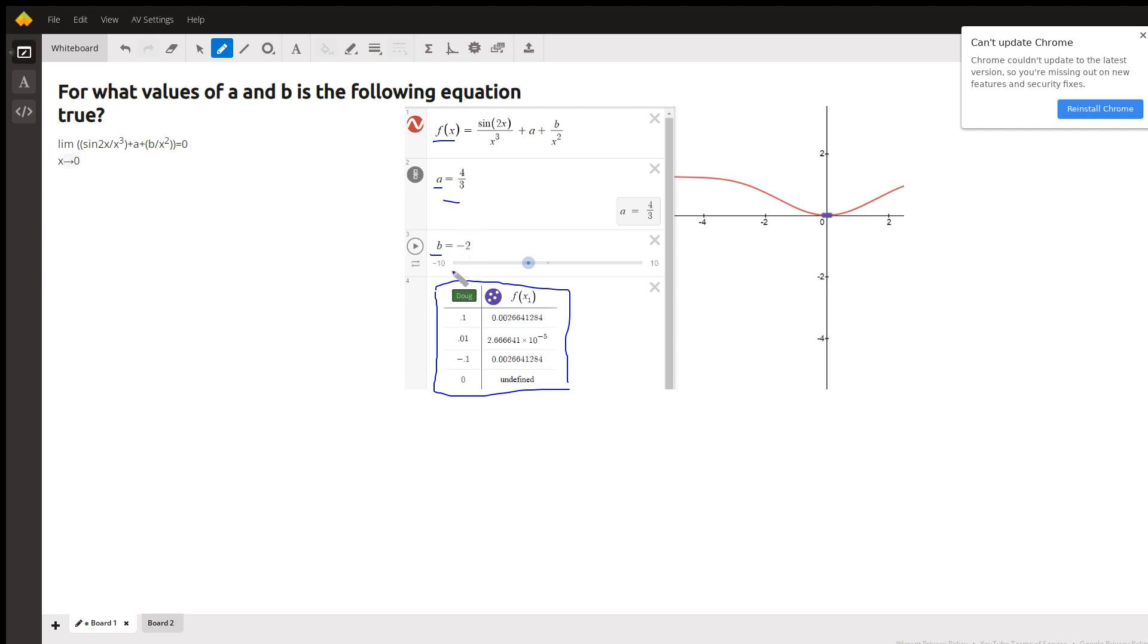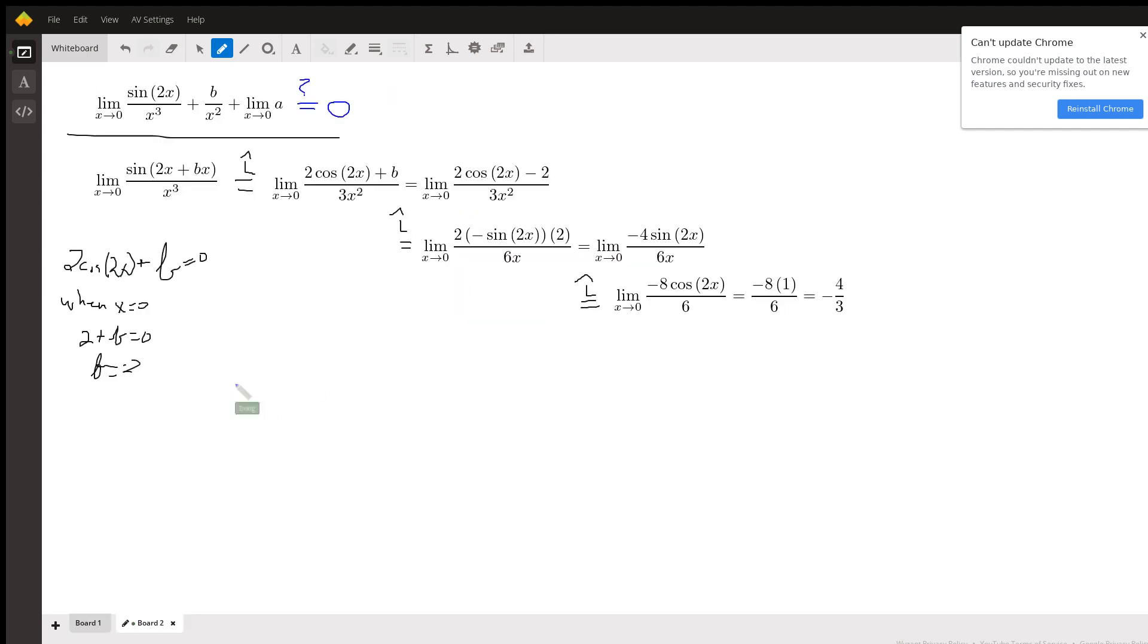The question is how did I come up with those values. Well, we want the limit as x approaches zero of this expression to equal zero. Now let's focus on just this part right here, which is what I've written down here, but I've combined these two fractions into one fraction.